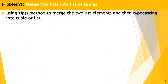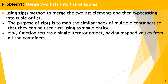Using the zip method, we can also merge two lists and then type-cast into either tuple or list. The purpose of zip is to map the similar index of multiple containers so they can be used as a single entity. The zip function returns a single iterator object having mapped values from all the containers passed to it.